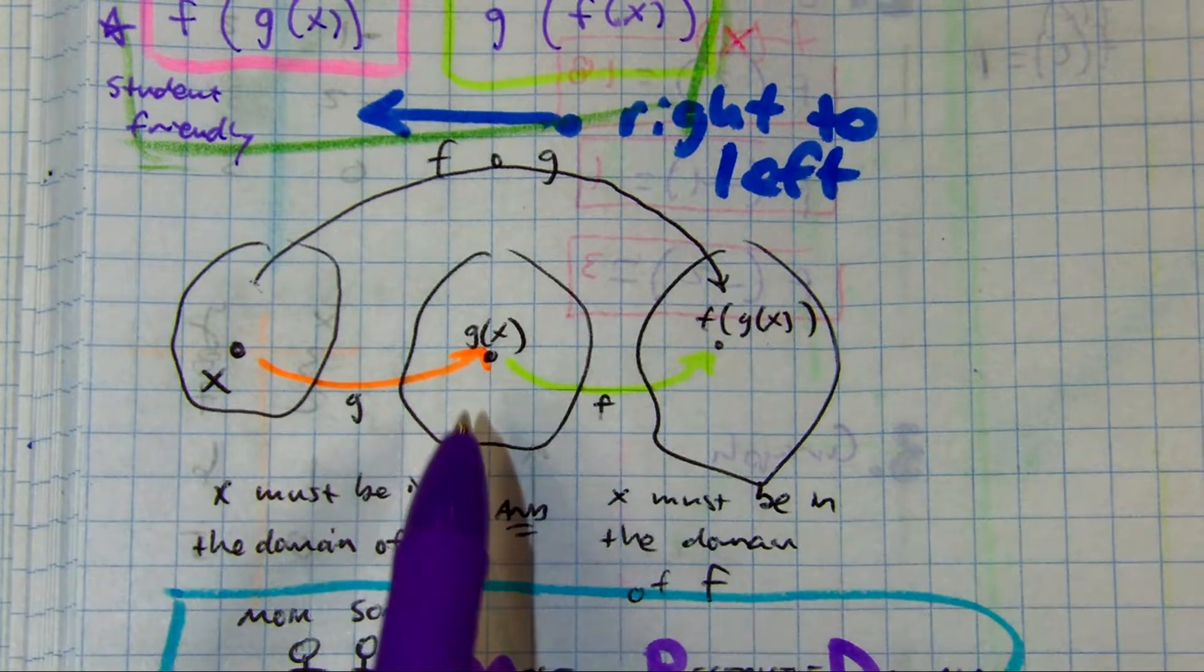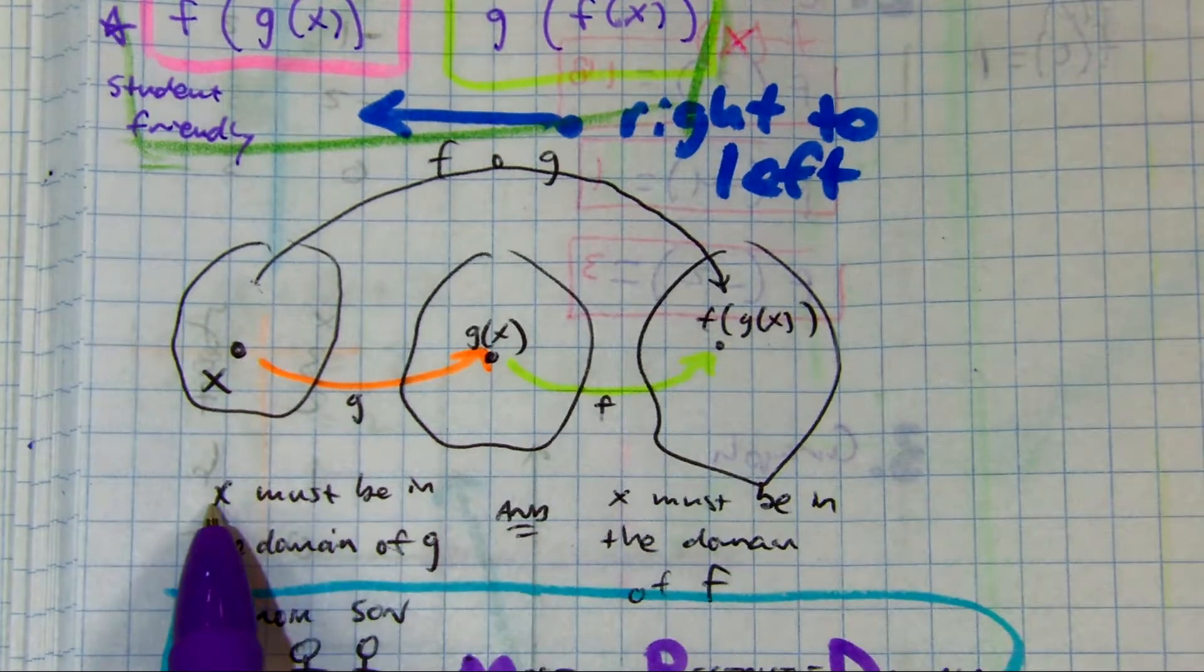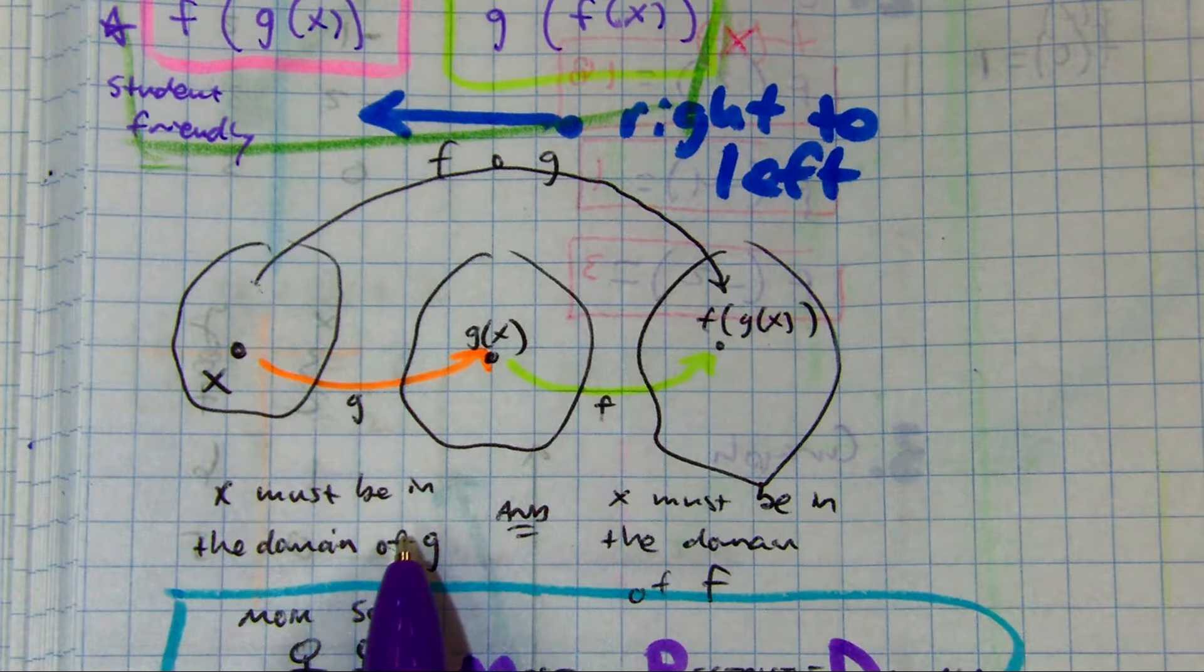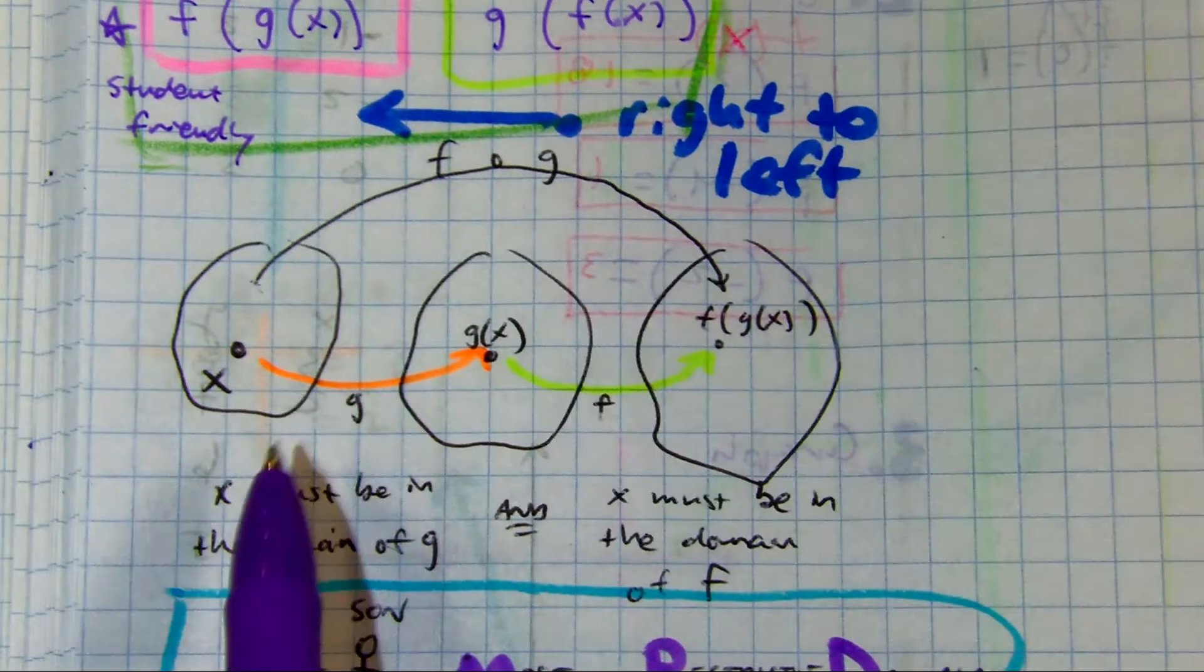All right, so remember in math, sometimes you can't pick all the numbers. There are some restrictions. So it says x must be in the domain of g. So whatever I pick, sometimes it's all real numbers, negative infinity to infinity, but sometimes it's not.